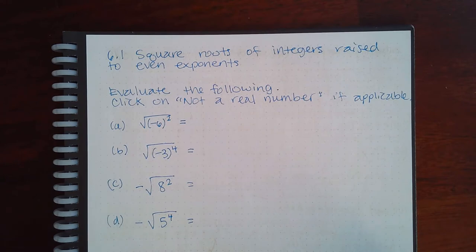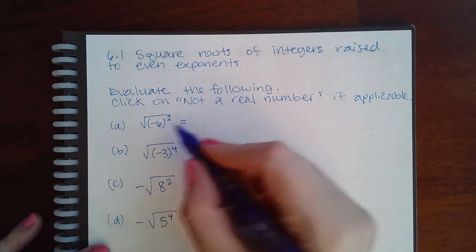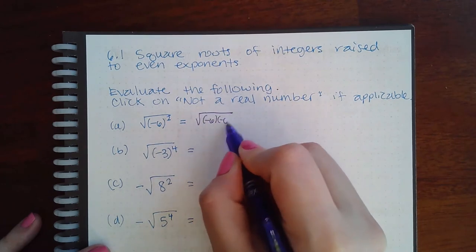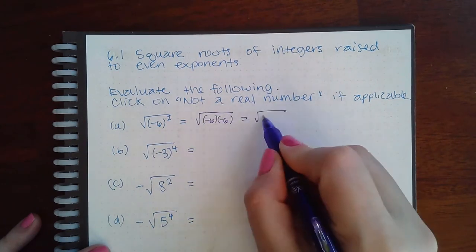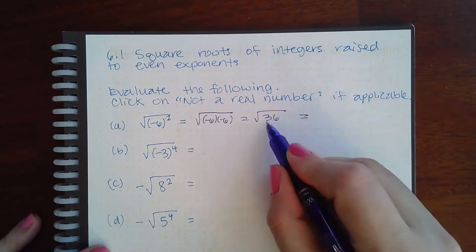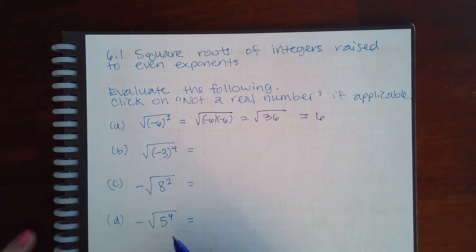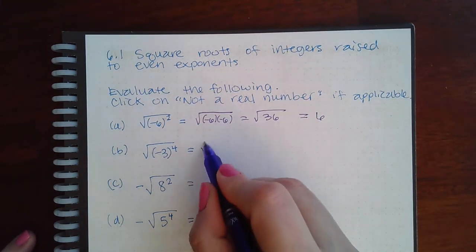Then you can decide whether or not the radicand is positive or negative. So here if I square negative 6, it means negative 6 times negative 6, which is a positive 36. And I can evaluate when the radicand is positive, so I just get the answer 6.